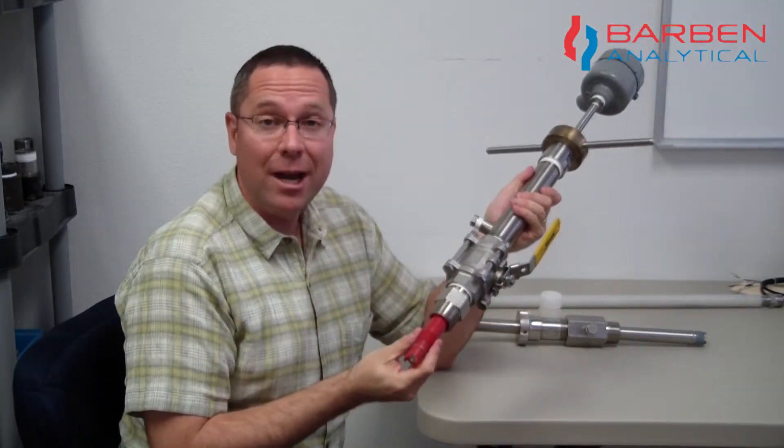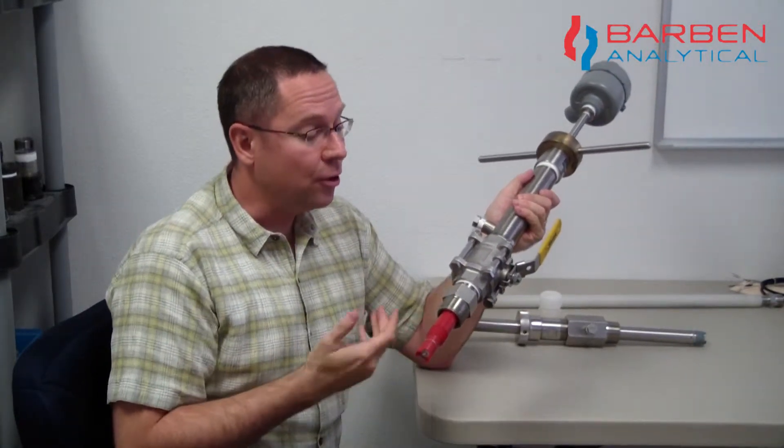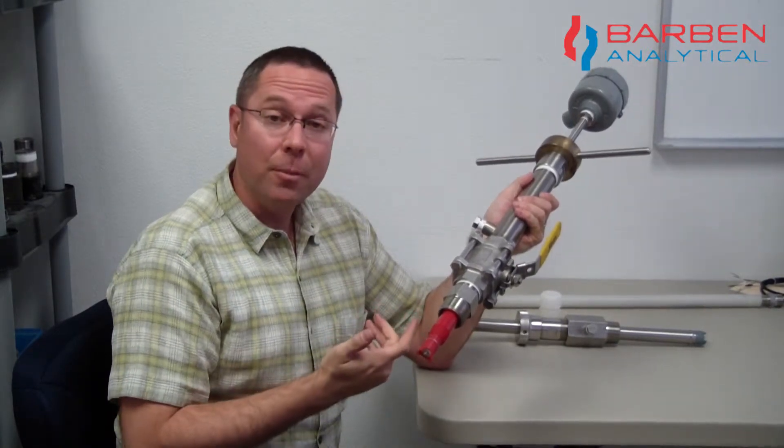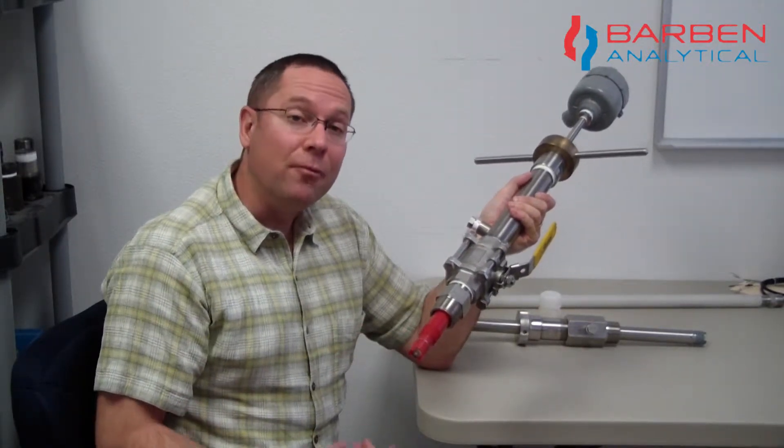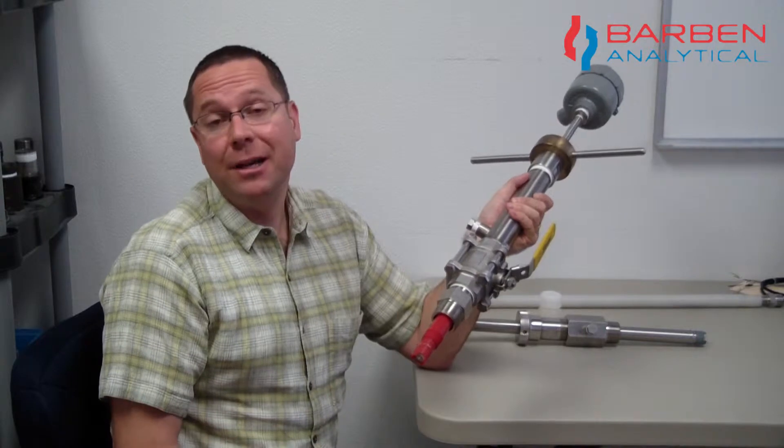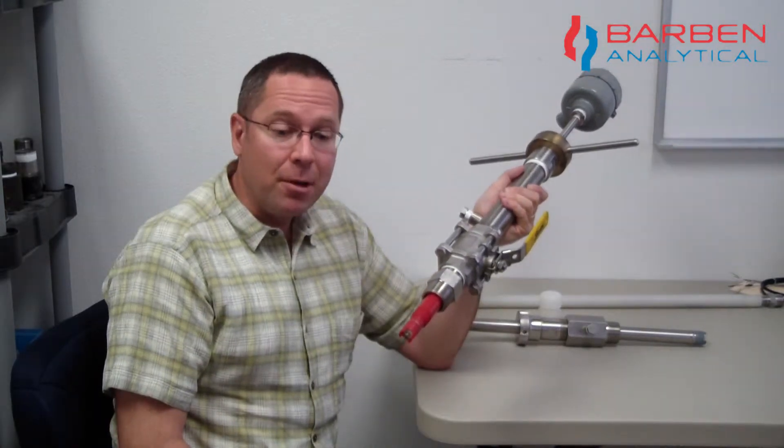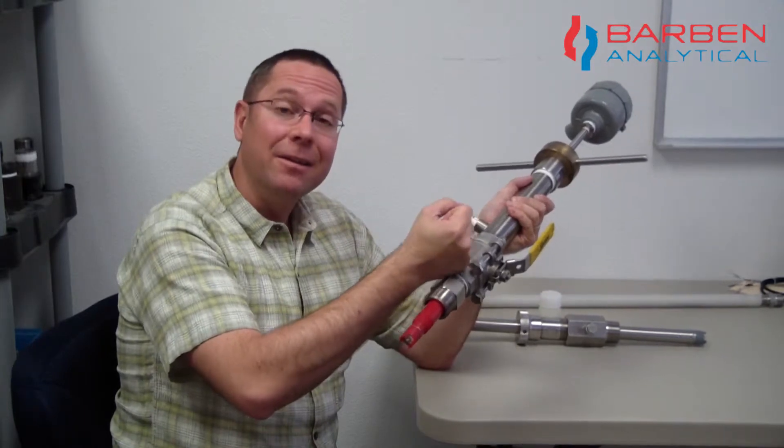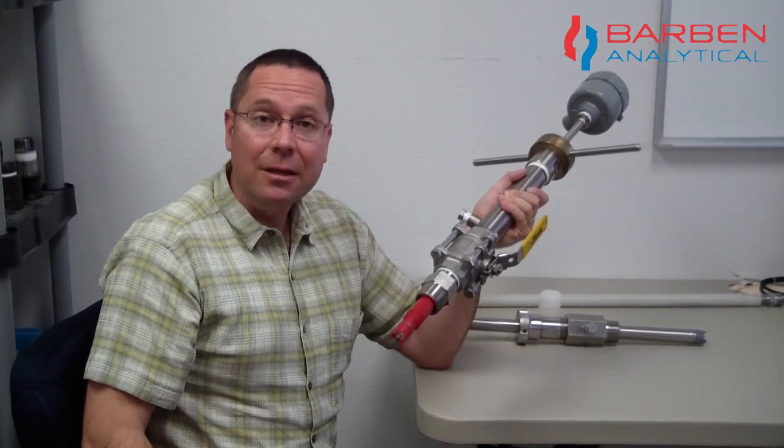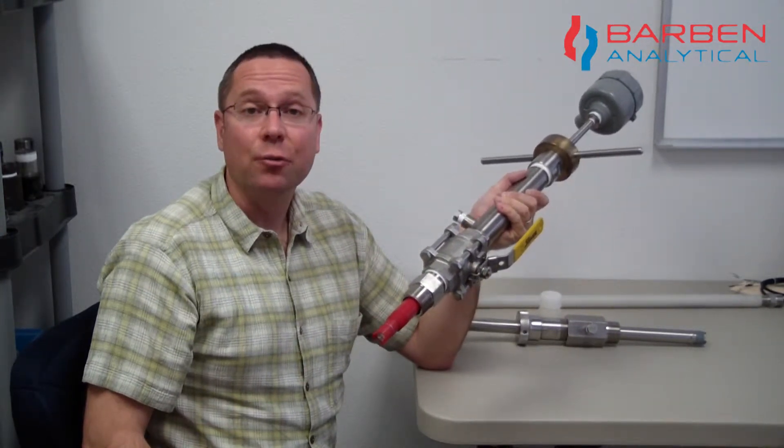Hot tap retractable sensors are designed to be inserted or removed from the process and isolated through a ball valve. These types of designs are a great solution for doing pH measurement in pressurized tanks or pressurized pipelines. They allow you to retract the sensor, isolate it, and remove it for cleaning, calibration, or eventual sensor replacement.